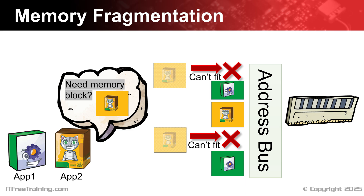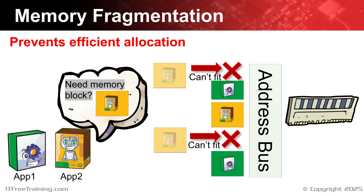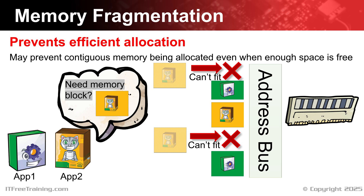Contiguous simply means that the memory needs to be allocated as a single section — it resides together in one place. There is enough memory to fulfill the request when both blocks are added together, however neither block is big enough on its own. Memory fragmentation prevents efficient allocation of memory. This ineffective allocation may prevent contiguous memory being allocated even when there is enough free space available. Let's have a look at how modern CPUs deal with this problem, which will help our understanding of how memory and virtual memory are managed.